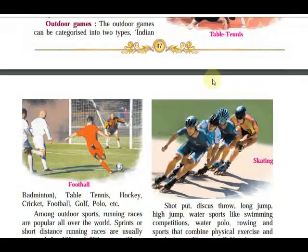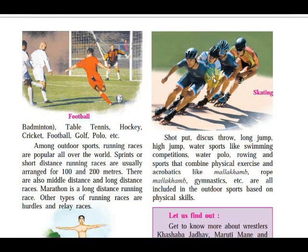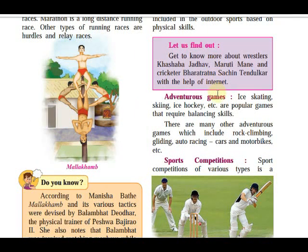Then there is shot put, discus throw, long jump, high jump, and water sports like swimming competitions, water polo, and rowing — rowing a boat is very famous in Kerala. Such sports combine physical exercise and acrobatics like Mallakhamb, rope Mallakhamb, gymnastics, etc., all included in outdoor sports. Based on physical skills, some adventure games are also there, which we will study in the next period.